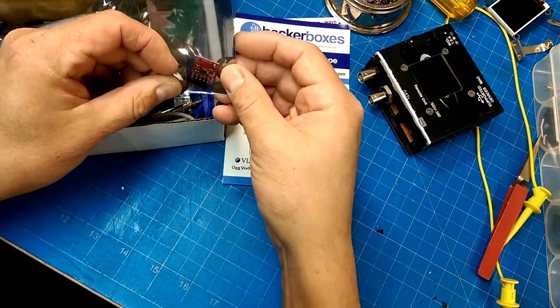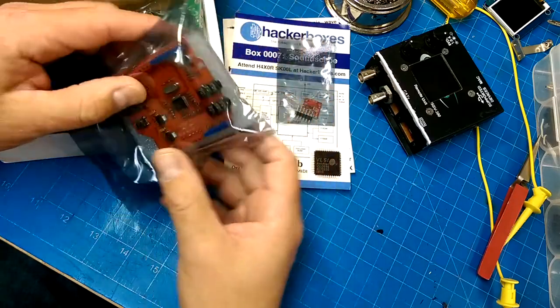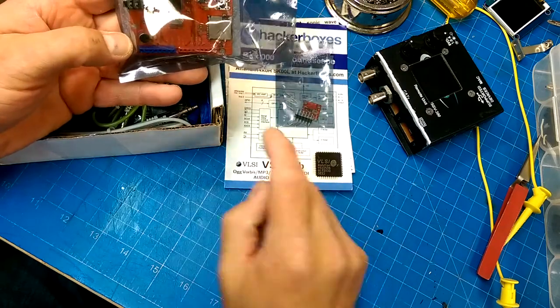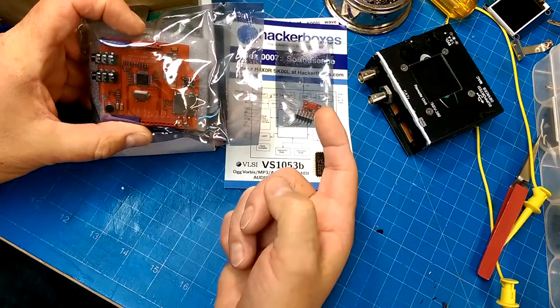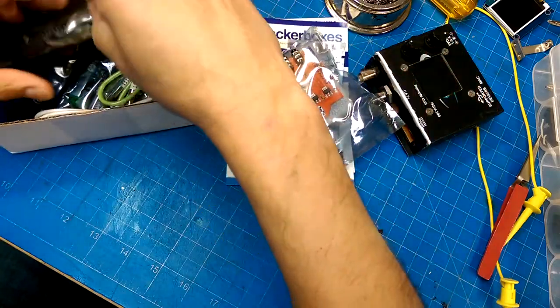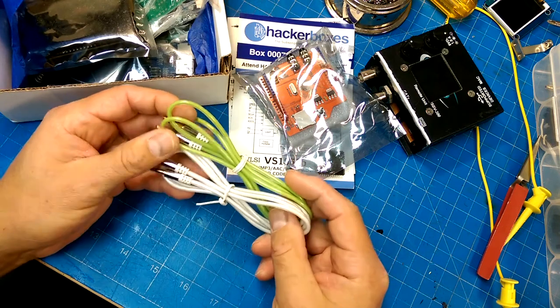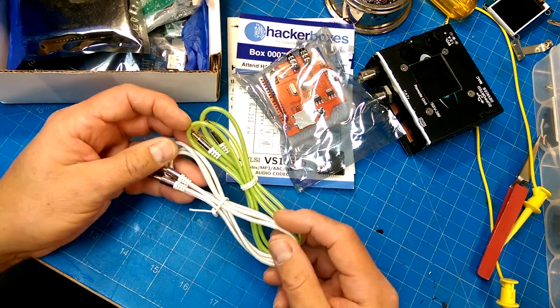There's the VS4725 right there, and that little baby becomes a daughter board for an Arduino, a shield I guess you call it. It came with nice audio cables, I forgot all about that. This was a nice box, and it just sat on my shelf for too long.